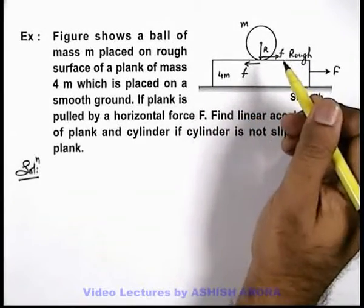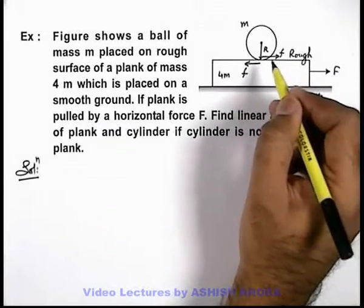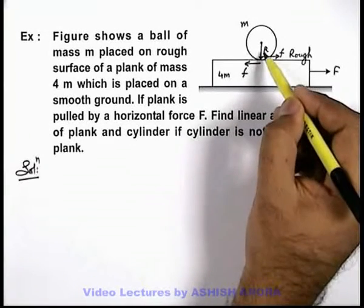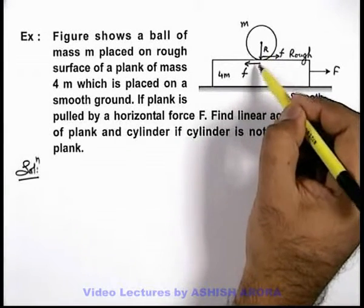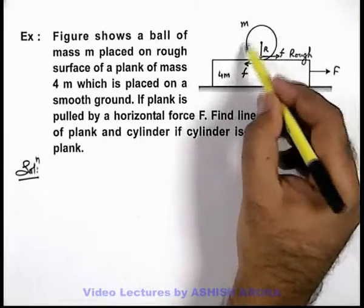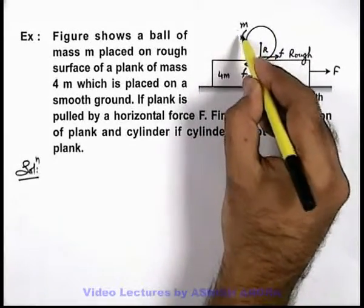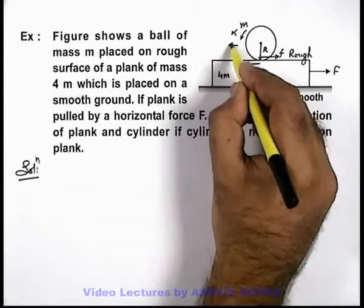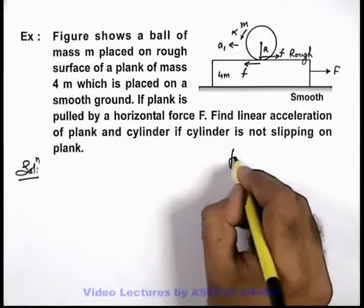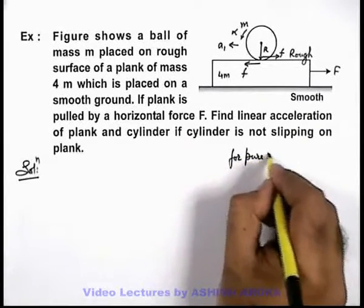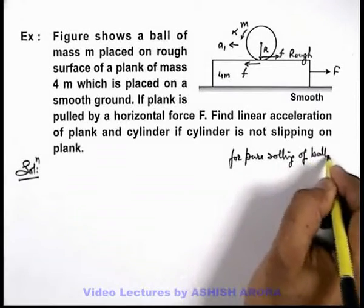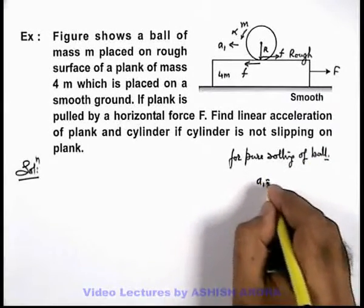In this situation we can state, as the cylinder is not slipping on the plank, that means it is in pure rolling. Then for the case of pure rolling we can say it'll be moving with respect to plank in backward direction with an angular acceleration alpha and an acceleration a₁. For pure rolling of ball, which we treat as a sphere, we can write a₁ equals r times alpha.